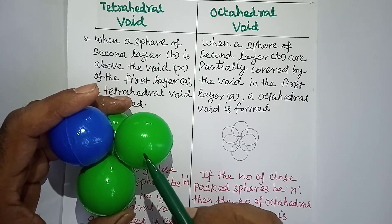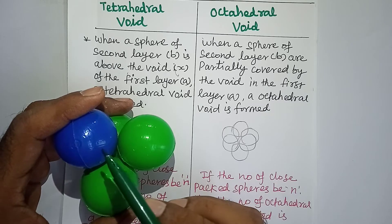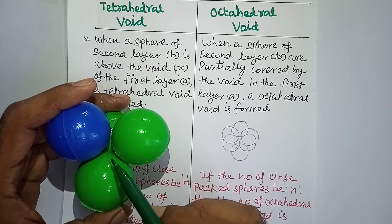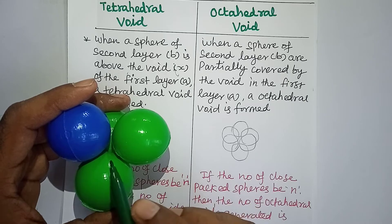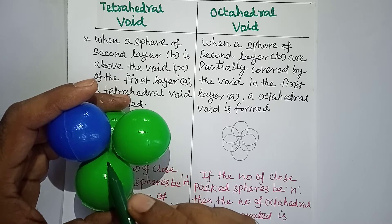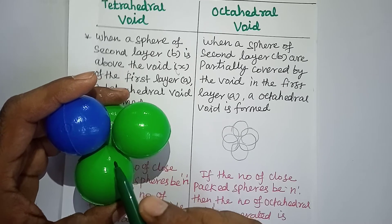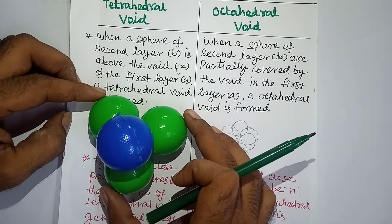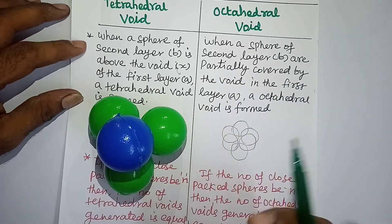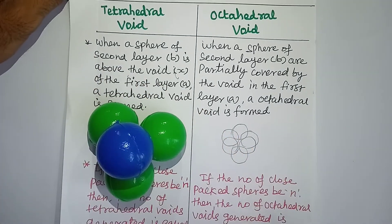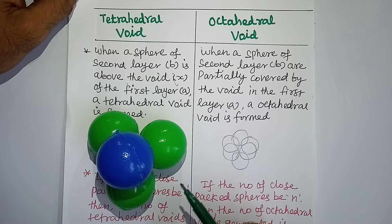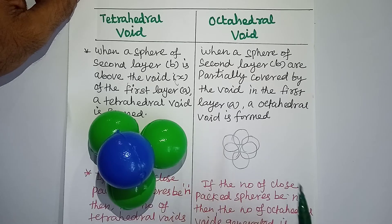This is the first layer, layer A. This is layer B. There is some gap or vacant space or free space between these four atoms. It is called a tetrahedral void. So the free or vacant or empty space present between four atoms is called a tetrahedral void.